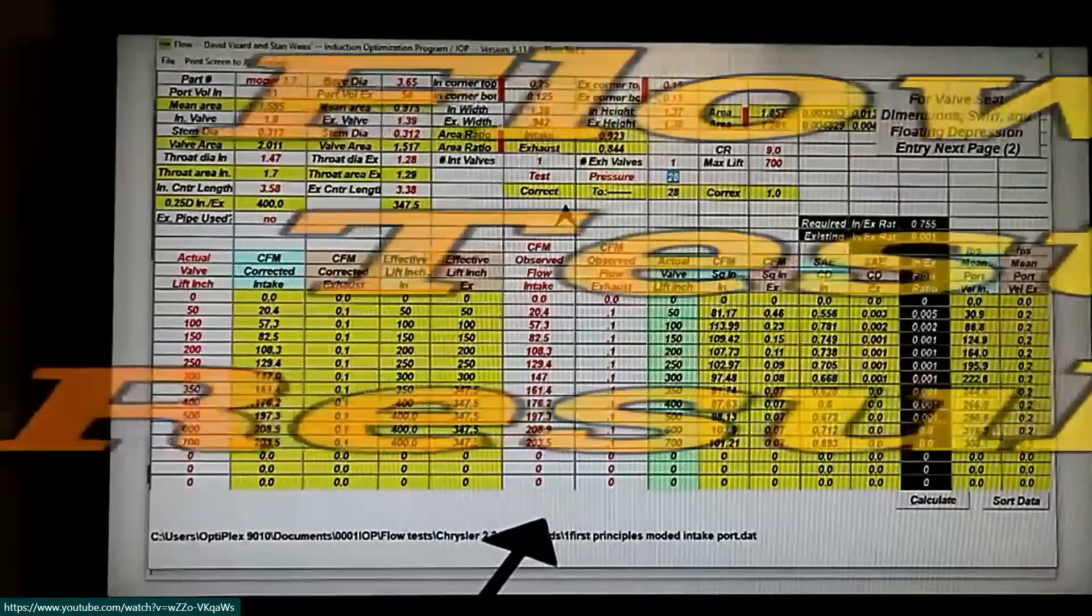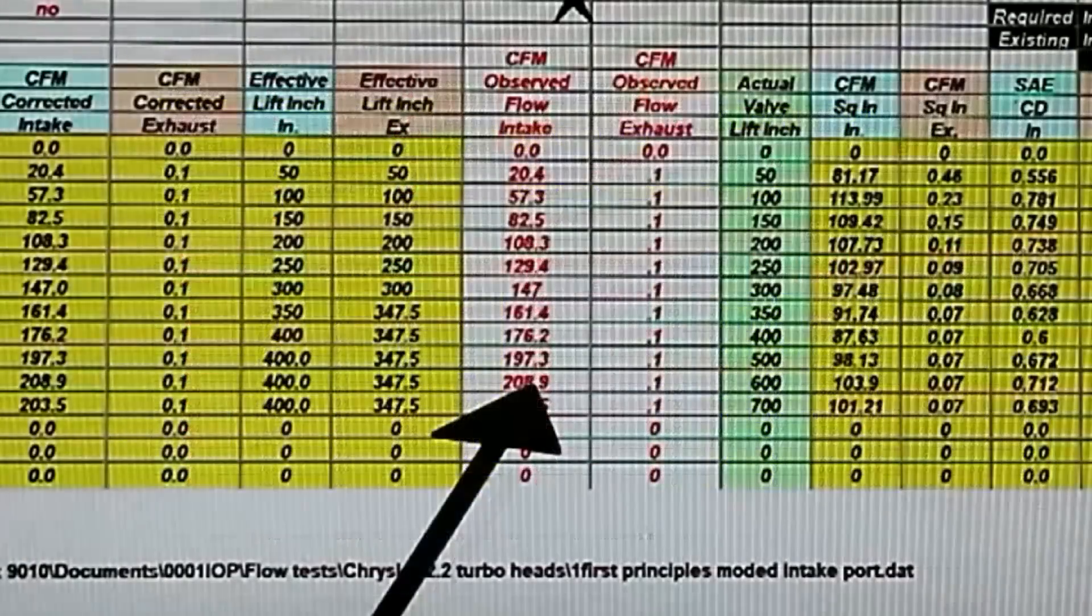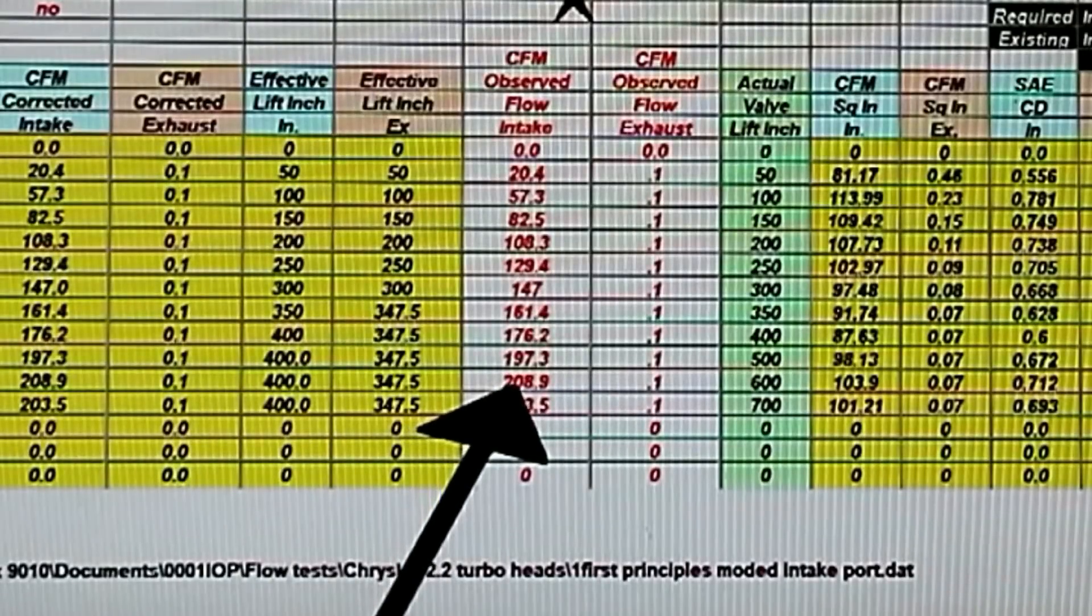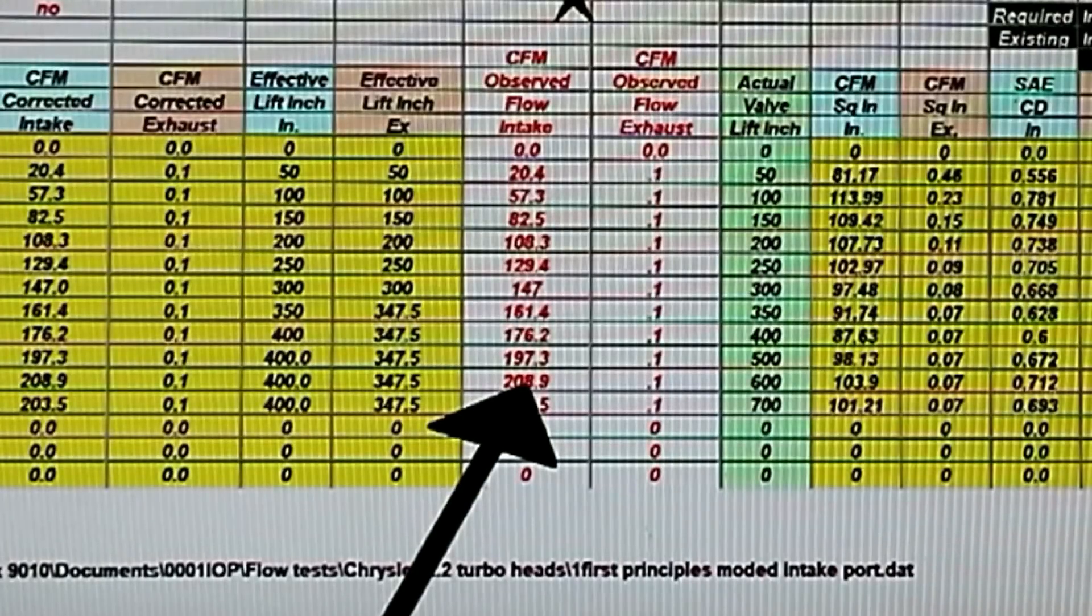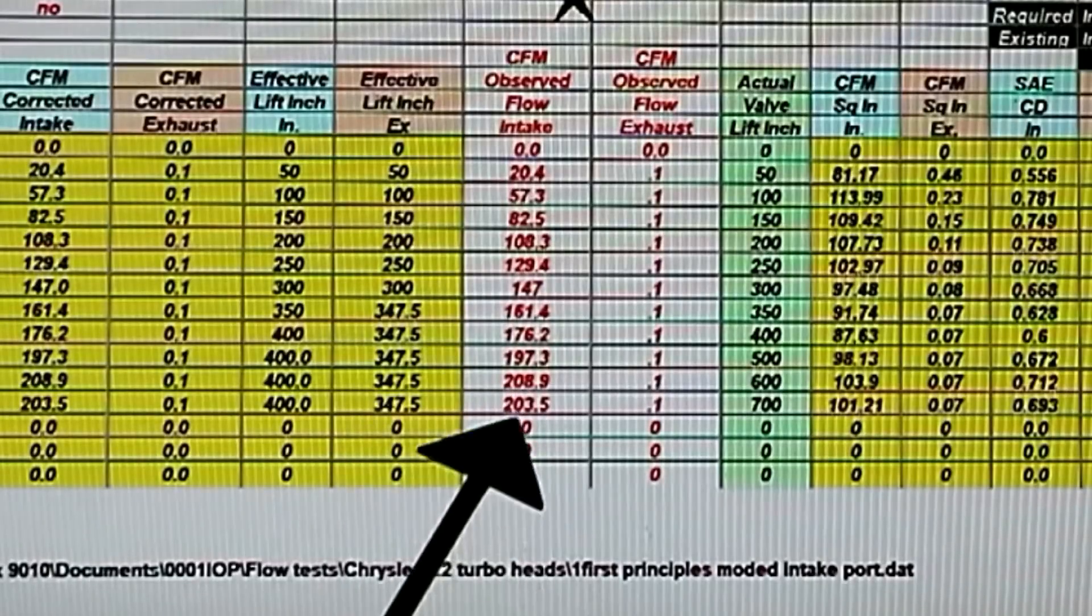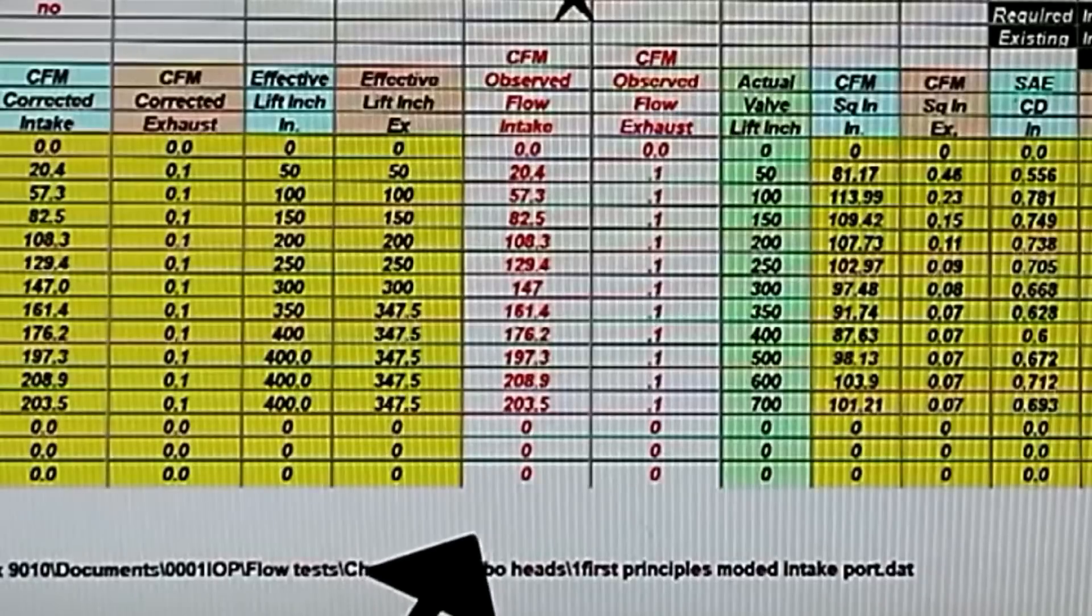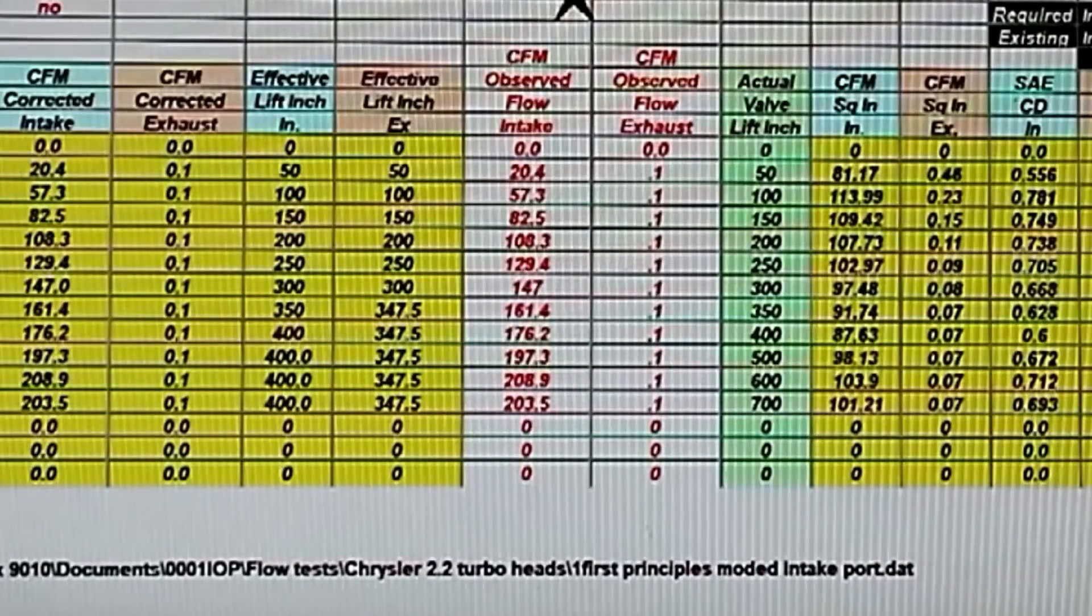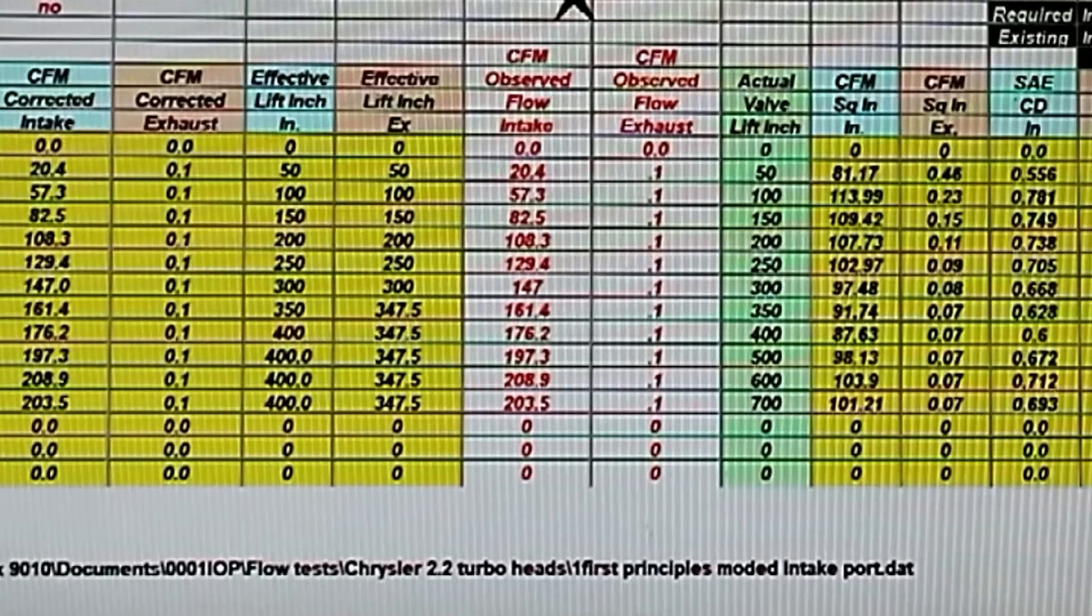Well, here are the results of the intake flow test. Our peak flow is up to 208.9 from 181. So, we've picked up 19 plus 9, 28 CFM, which is over 10%. But peak flow numbers aren't the whole story. They're only just a fraction of it. The way we can see all this best is to look at the graphs and compare these figures with the ones that we started off with.